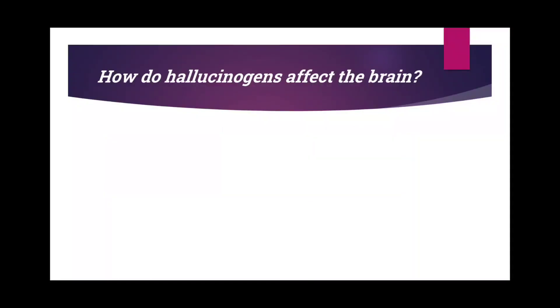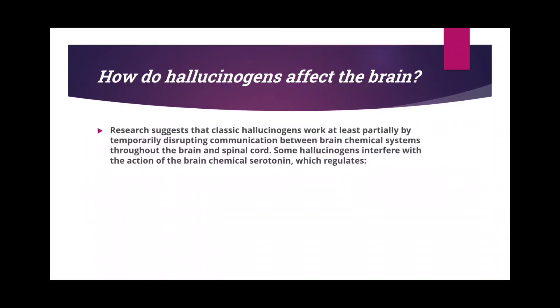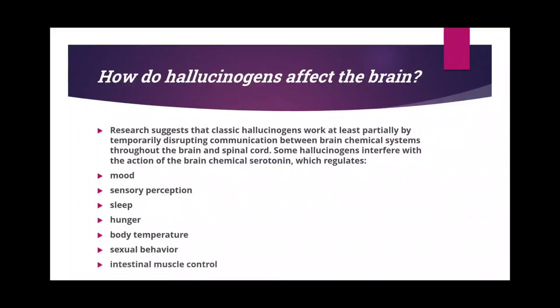Research suggests that classic hallucinogens work at least partially by temporarily disrupting communication between brain chemical systems throughout the brain and spinal cord. Some hallucinogens interfere with the actions of the brain chemical serotonin, which regulates mood, sensory perception, sleep, hunger, body temperature, sexual behavior, and intestinal muscle control.